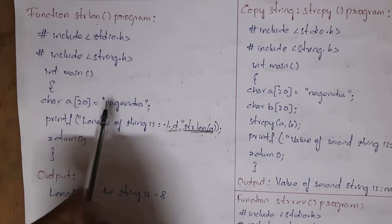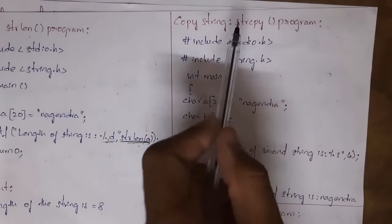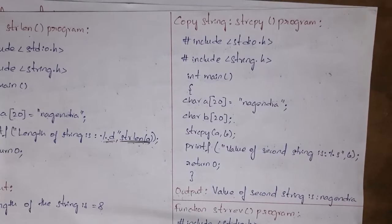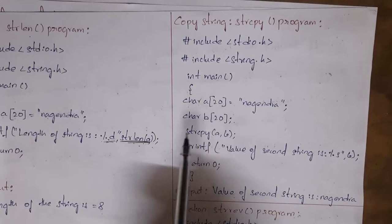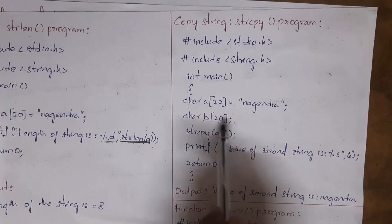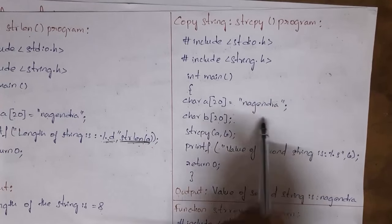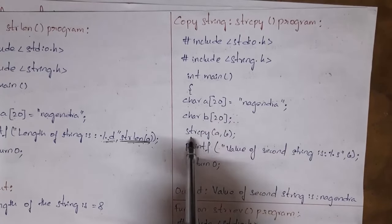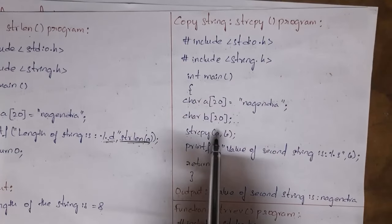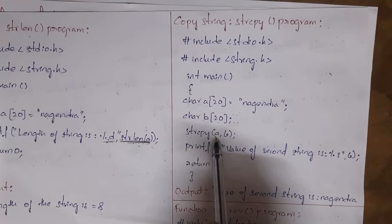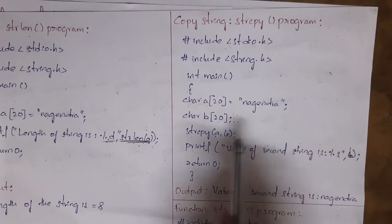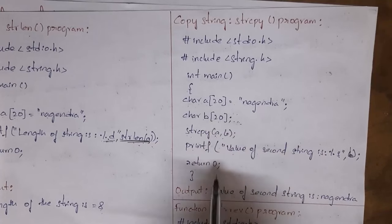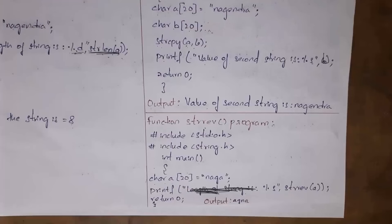Next is strcpy — string copy. If you want to copy data from one string to another, use strcpy. For example: char a[20] = "Nagendra"; char b[20]; strcpy(a, b). This copies data present in variable a to variable b. Then printf("Value of second string is %s", b) gives output: value of second string is Nagendra. Next is strrev — string reverse. If you want to convert a string in reverse manner, use strrev. For example: char a[20] = "Naga"; printf("%s", strrev(a)). The string is reversed, so output is agan.